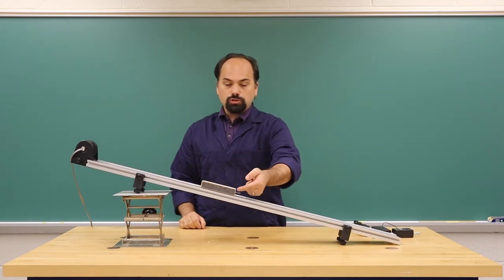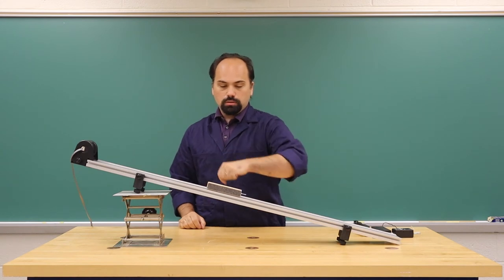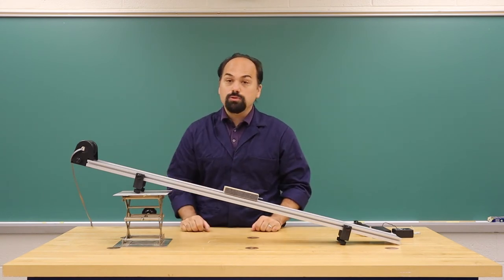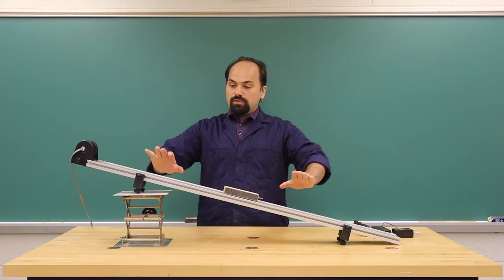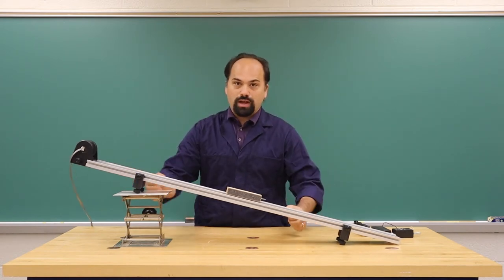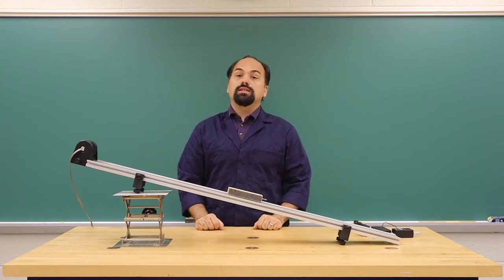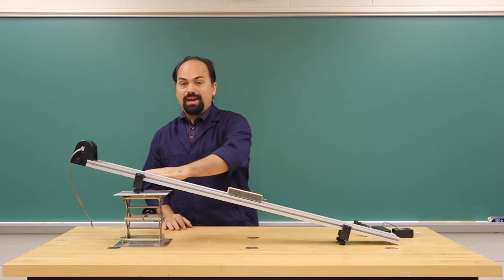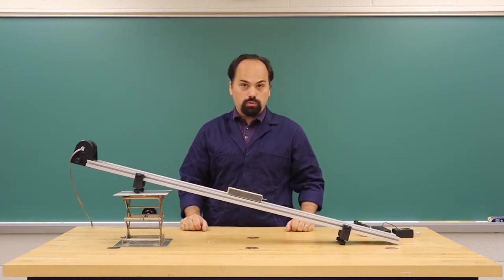which means that if this starts to move at all, it can continue to move even though we are not at the critical angle. So if you are jostling your track or hitting your table, it is quite possible that you will get an angle that is much smaller than you hoped for.